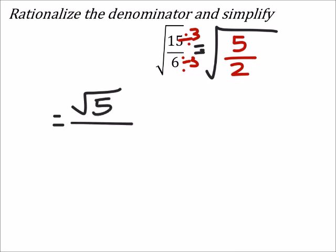I should split this up so I got the square root of 5 over the square root of 2. Since I have a square root, I'm looking for pairs of values, so if I multiply this by the square root of 2 and the square root of 2, that should get rid of the square root in the denominator.